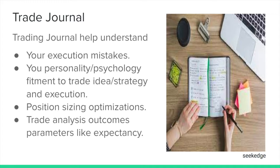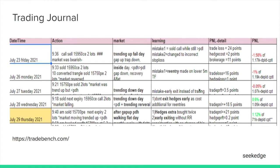You cannot understand what happened other than the PNL. The PNL is not the only thing we look at. Trade outcome analysis can be done only from the trading journal. This is one small example — just for demonstration — of how I make some of the trading journal entries. You can see the trade details, what the market was doing when the trade was taken, what you learned from that, what mistake was made, and what the outcome was.